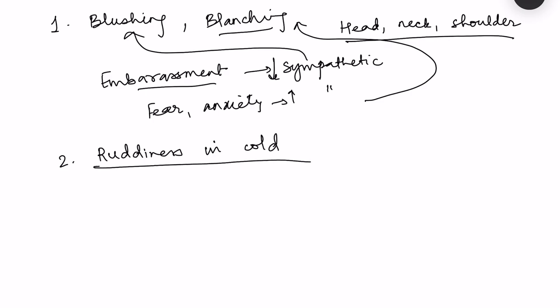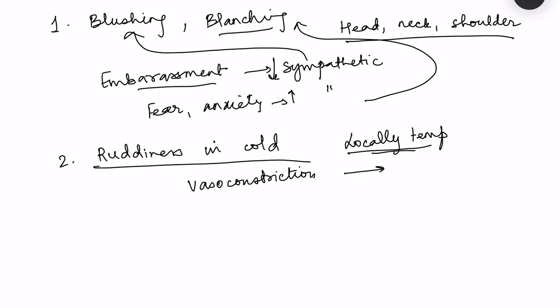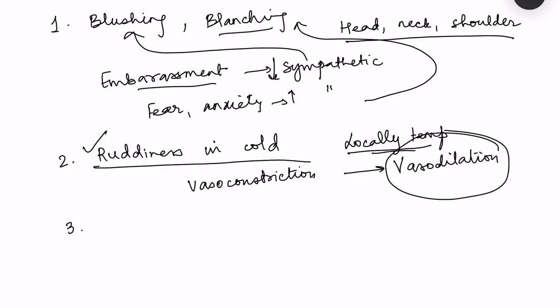Why does redness appear in cold, if we say cold causes vasoconstriction? This is because the muscles in the blood vessels respond locally to temperature. Initially in cold, muscle spasm causes vasoconstriction. However, as the temperature decreases further, the muscles stop responding, leading to loss of muscle spasm and thus local vasodilation. This local vasodilation — because muscles have stopped responding due to too much cold — causes the redness we see in the skin in very cold conditions.